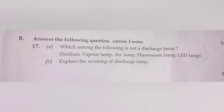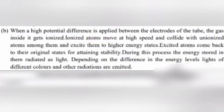(b) Explain the working of discharge lamp. When a high potential difference is applied between the electrodes of the tube, the gas inside it gets ionized. Ionized atoms move at high speed and collide with unionized atoms among them and excite them to higher energy states. Excited atoms come back to their original states for attaining stability. During this process, the energy stored in them radiated as light. Depending on the difference in the energy levels, light of different colors and other radiations are emitted.